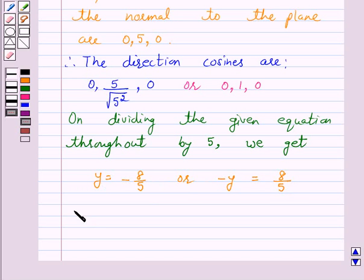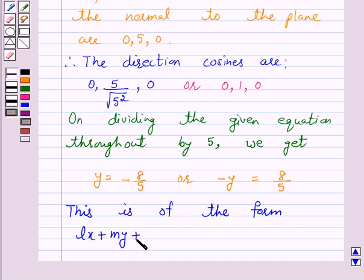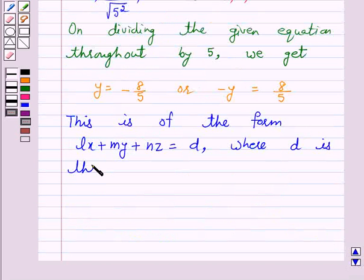Now this equation is of the form lx plus my plus nz is equal to d, where d is the distance of the plane from the origin.